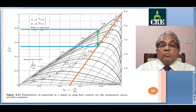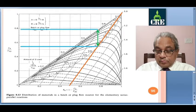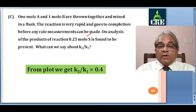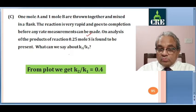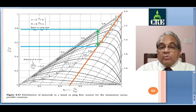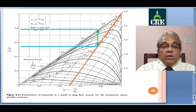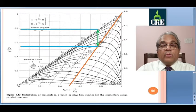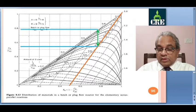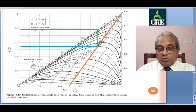From this intersection, this value is 2 and remaining corresponds to CA and CR. Since it is asked only about K2 by K1, from the plot we get K2 by K1 equals 0.4. CA is also 0.25. CR will be something like between 0.5 and 0.6. These values can be found exactly from the plot or by quantitative calculations using the models we have already solved.